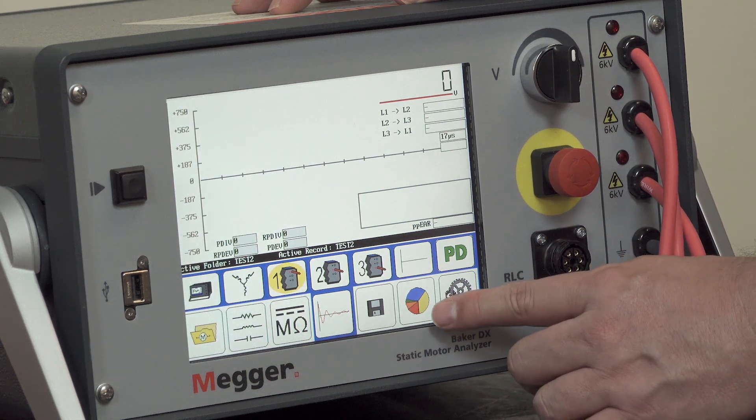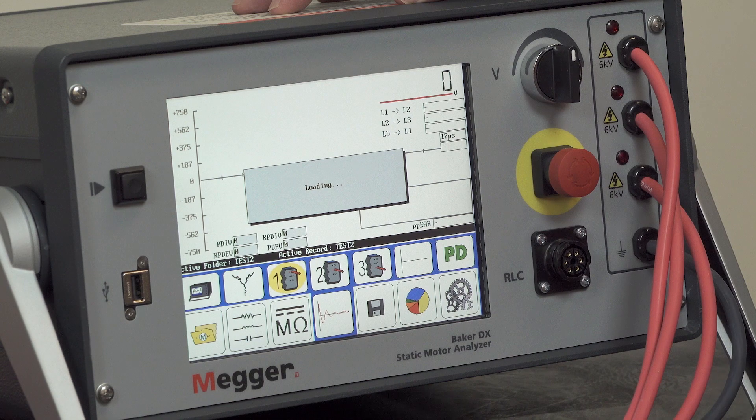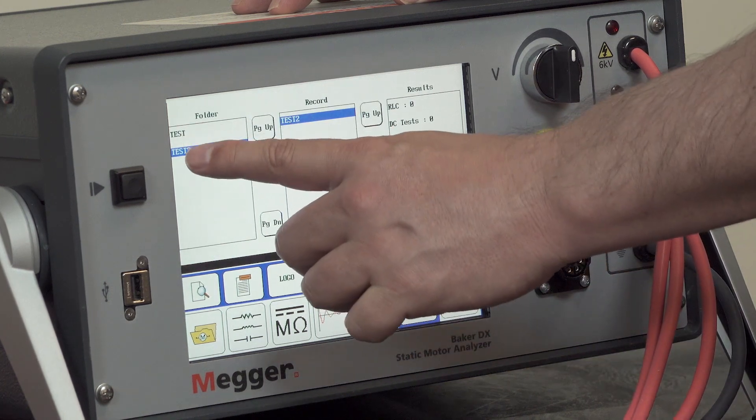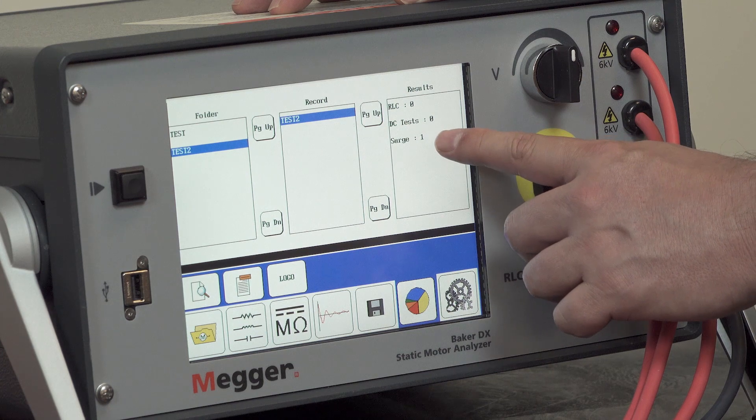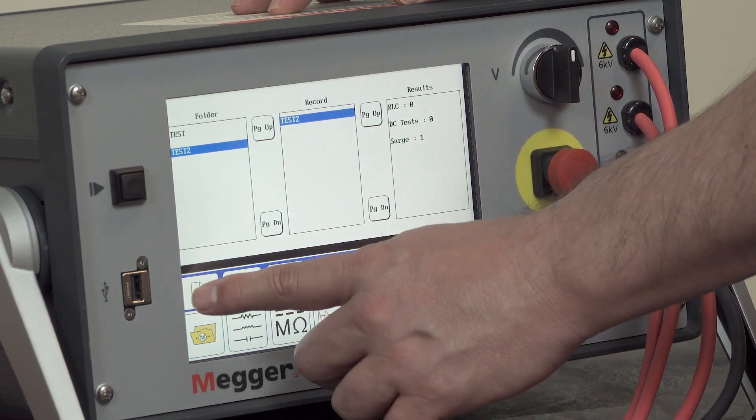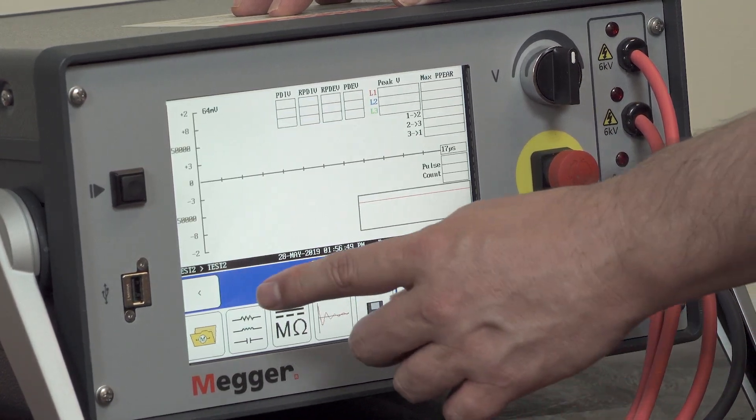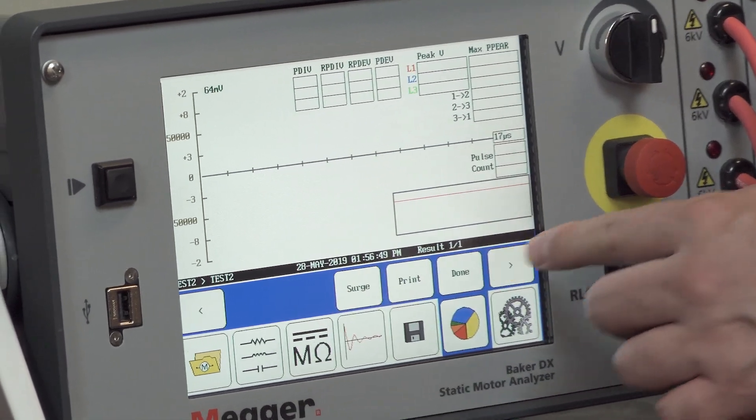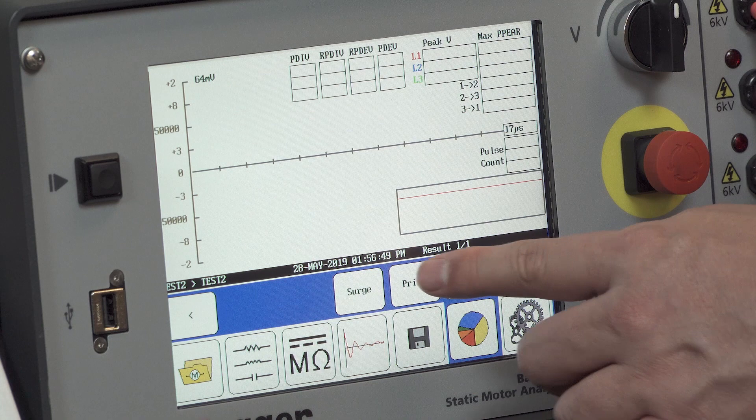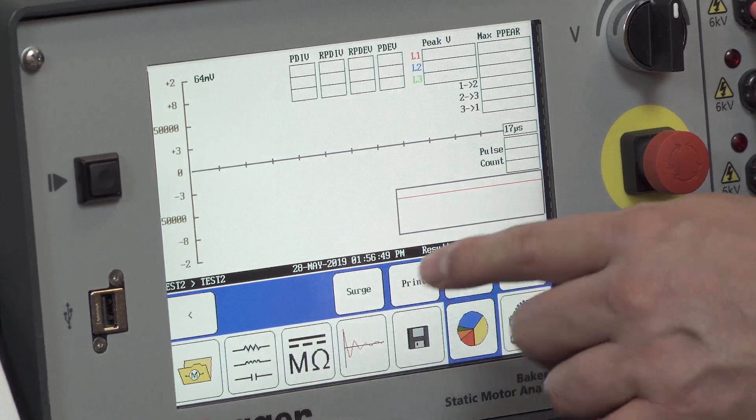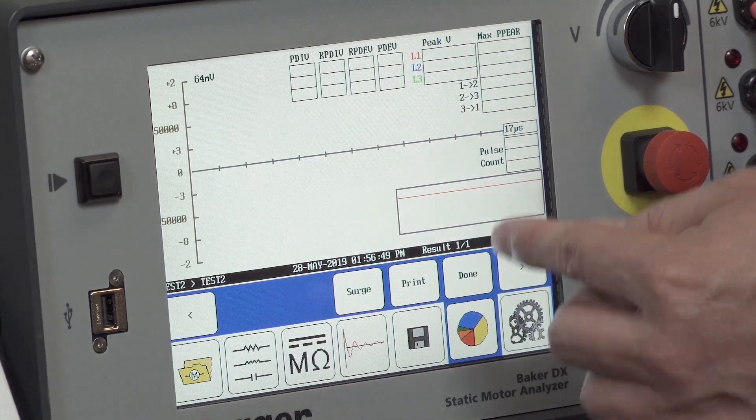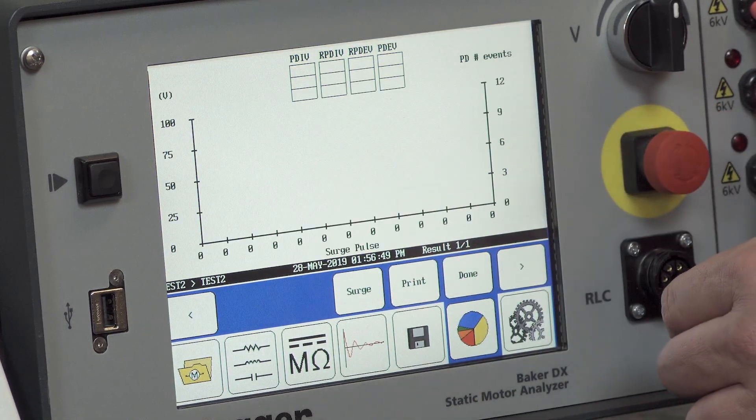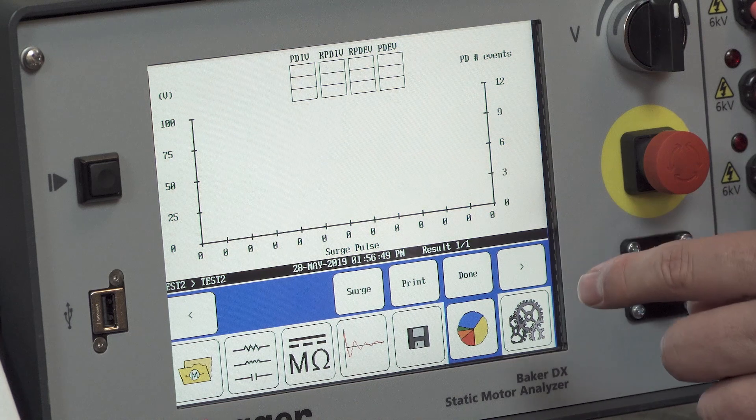The next icon is for reports. Here you can see the tests that have been conducted: folder, record, and results. By selecting this icon, you can select which records you want to include in your report. You're allowed to either print, and depending on the type of record, you can see additional information by tapping the screen.